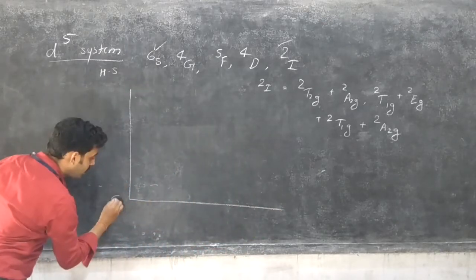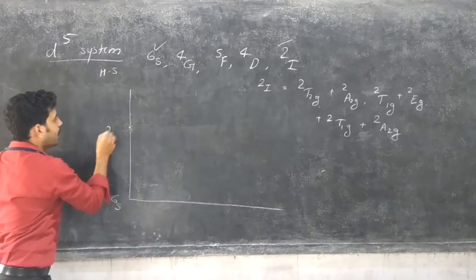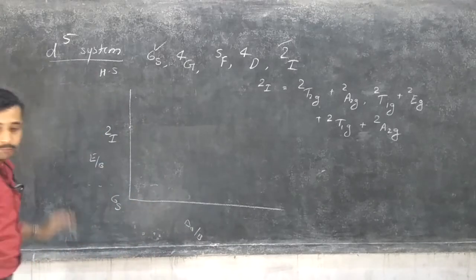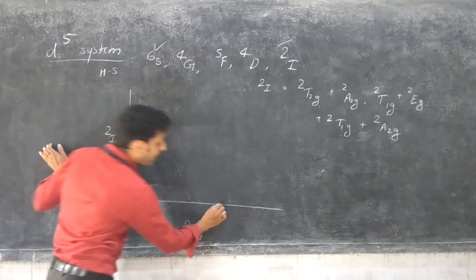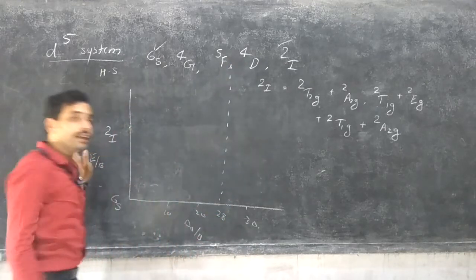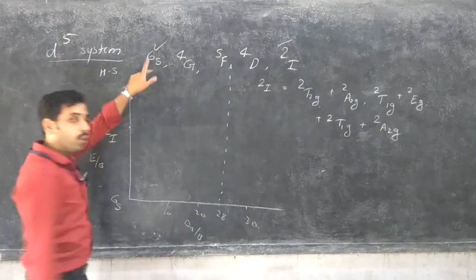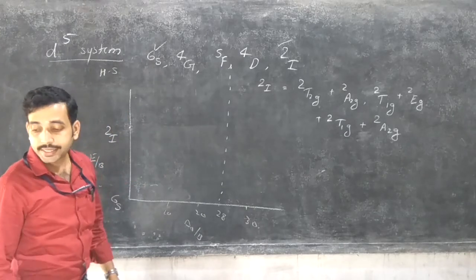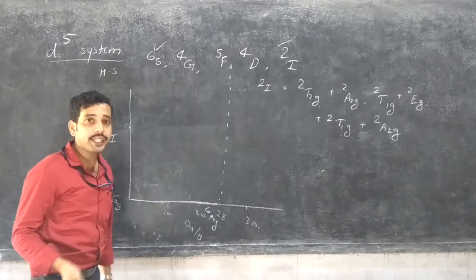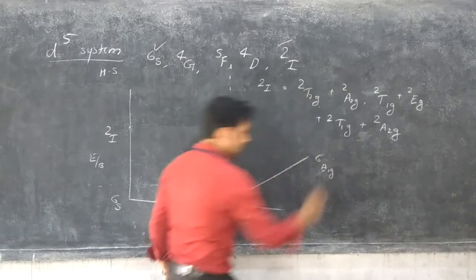Let's start the Tanabe-Sugano diagram of the D5 system. Here 6S is the lowest energy, and other terms like 4G, 5F, 4D are neglected; directly consider 2I. Plotting delta-0/B against E/B, with values around 10, 20, 30, a vertical line distinguishes high spin and low spin. 6S means only A1G symmetry, so 6A1G is the ground state energy, which increases in the low spin complexes.